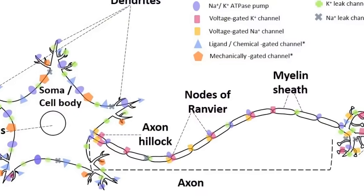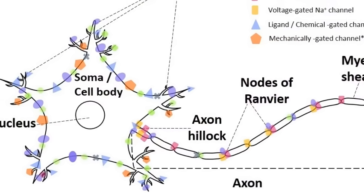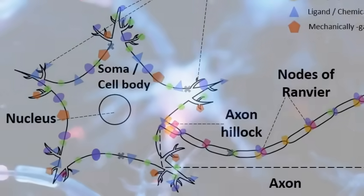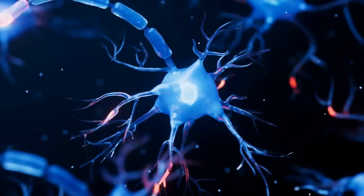Every neuron has a cell body or soma. This is the neuron's command center. It contains the nucleus which holds DNA and keeps the cell running.